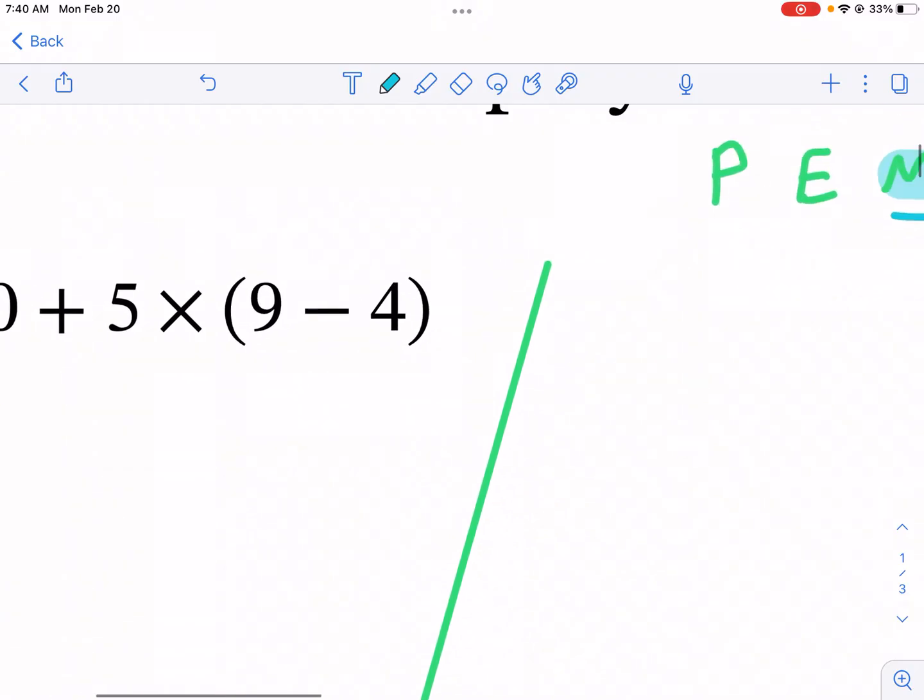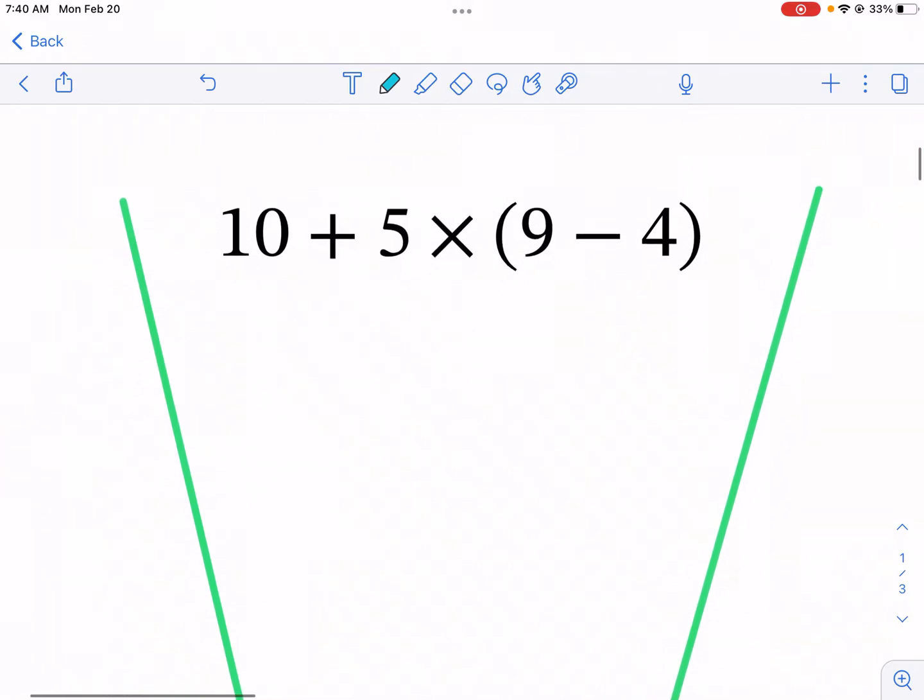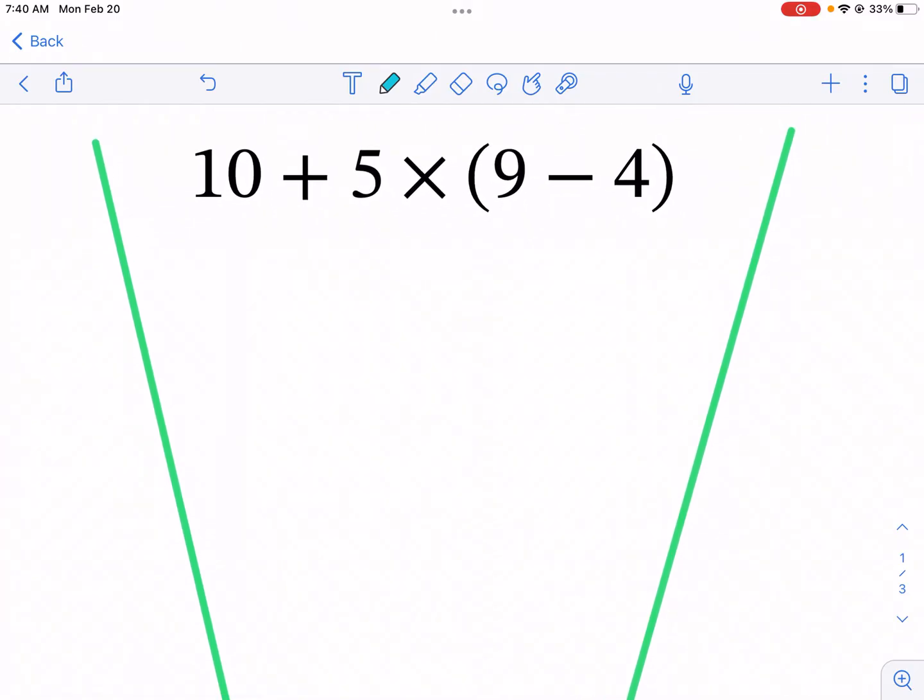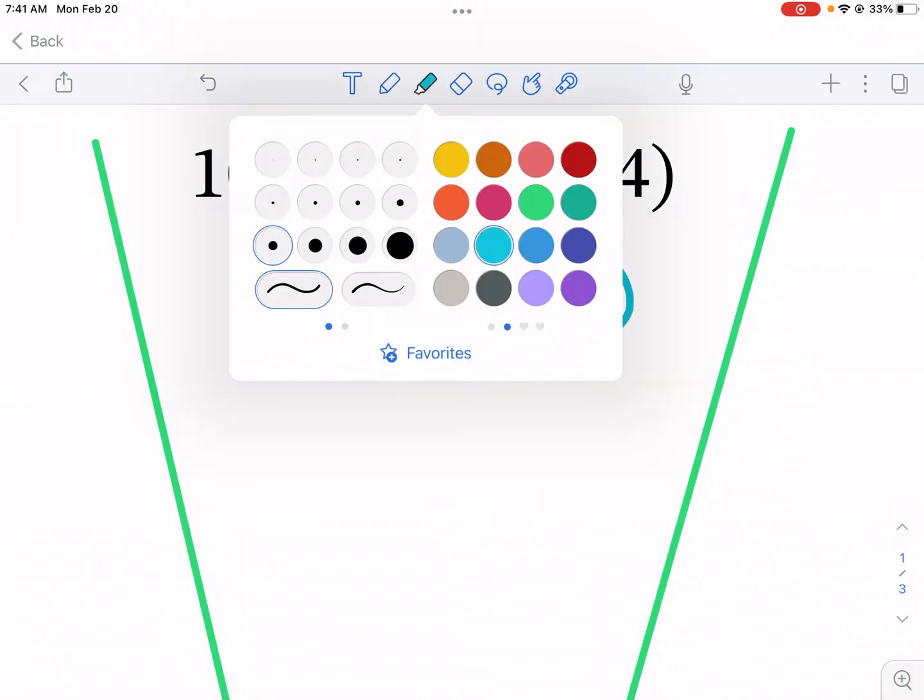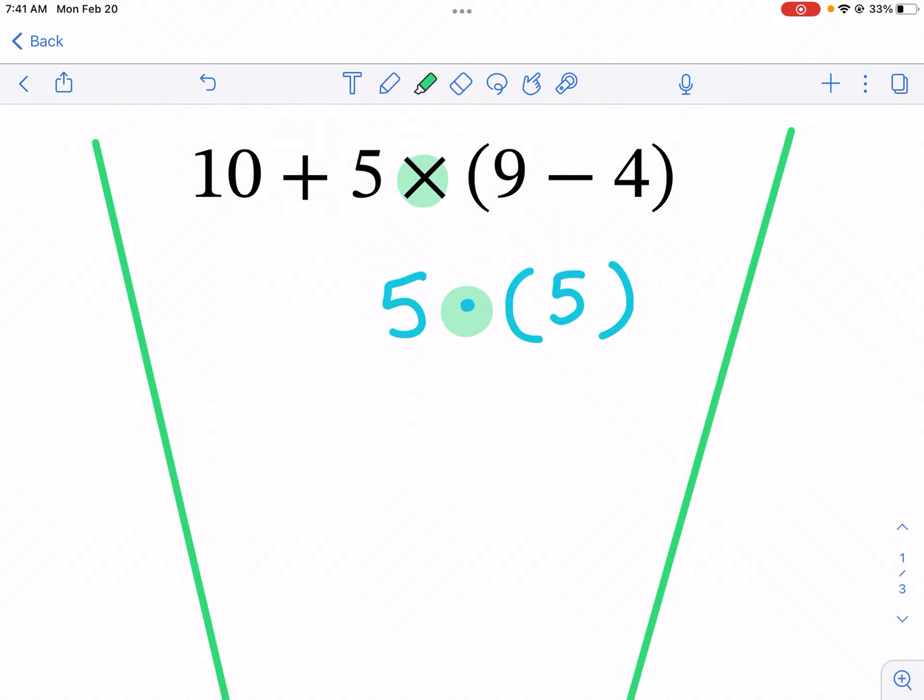Now with this one we see that there's parentheses, so there's no debate—we're gonna do the parentheses first. We're just gonna do 9 minus 4, and that's gonna be equal to 5. Now you can keep this in parentheses or you cannot. One thing I'm gonna show is I'm gonna change this to that dot—that's just another way to express multiplication.